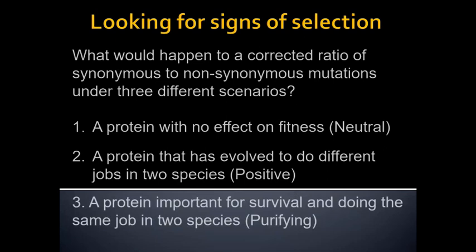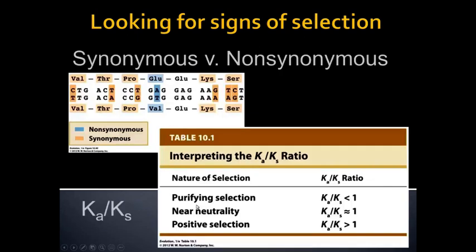Make sure you recognize those three categories. On the exam, you might see matching questions, true/false, or multiple choice where you need to identify these. The null hypothesis — the original assumption — is neutrality. If a gene violates that, it can fall into positive or purifying selection. The Ka to Ks value is an adjusted version — we can't just count mutations up; we need to adjust for how many possible sites there are.